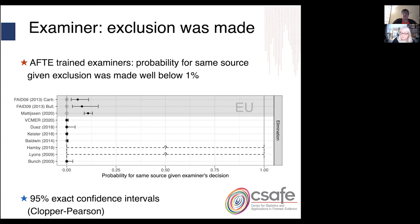On the other side, if the examiner says an exclusion was made, what's the probability that it's actually same source? This is an error rate — the probability of same source given the examiner said exclusion. Error rates here are even smaller than before — well below one percent. Again, European-type studies are a bit different.